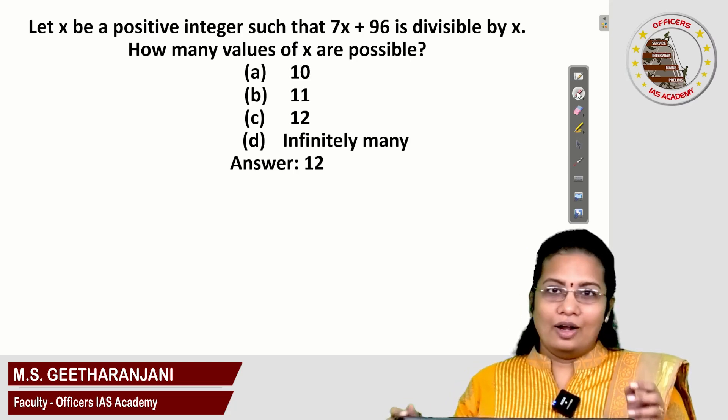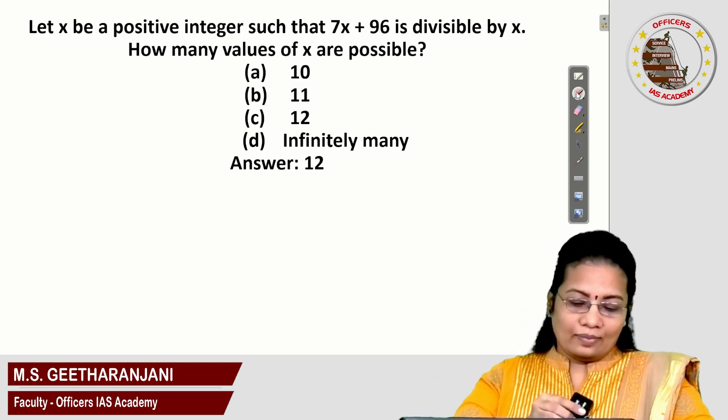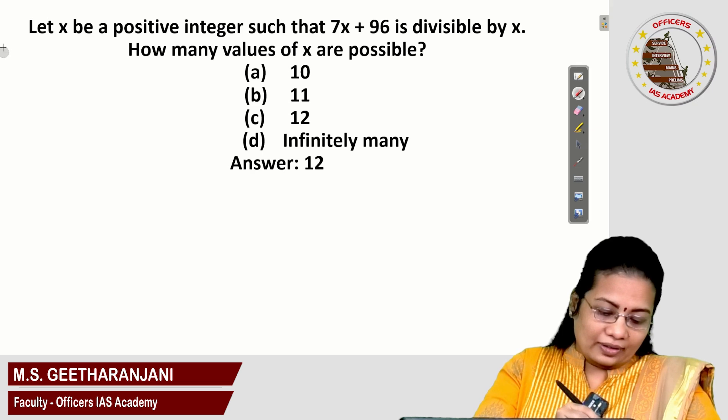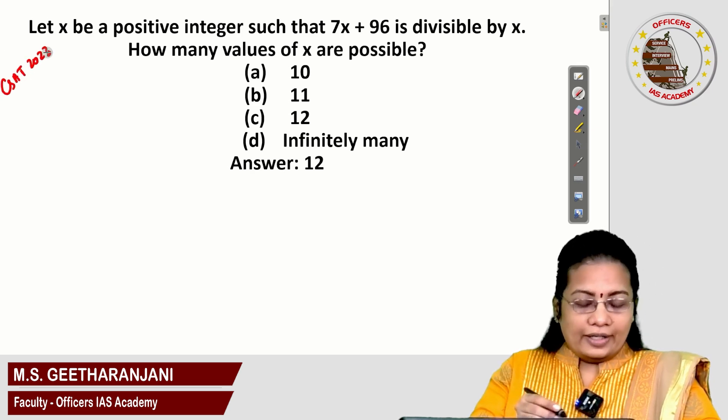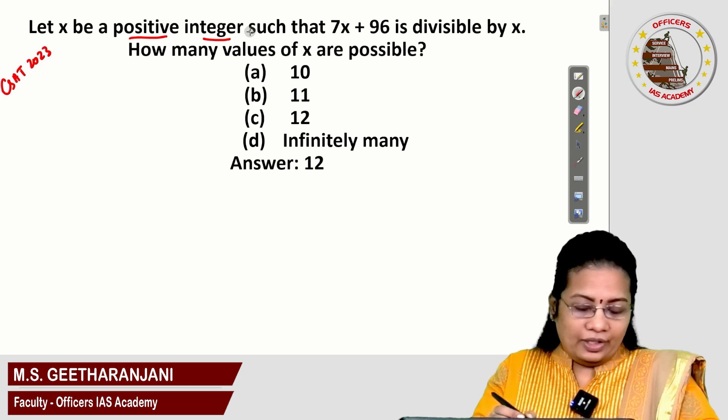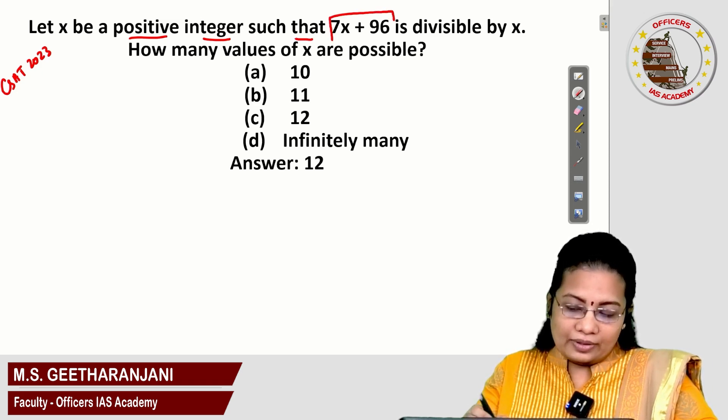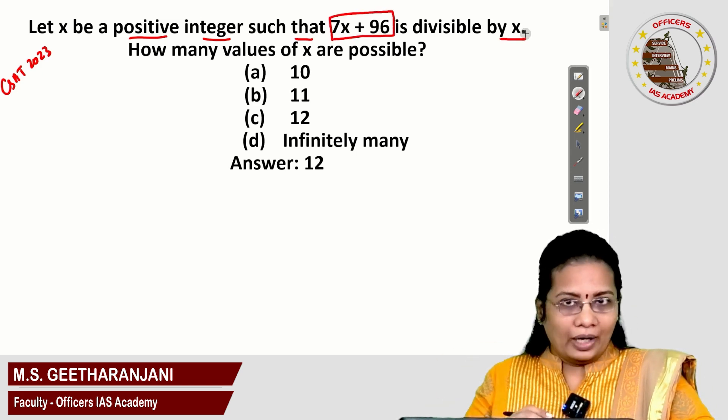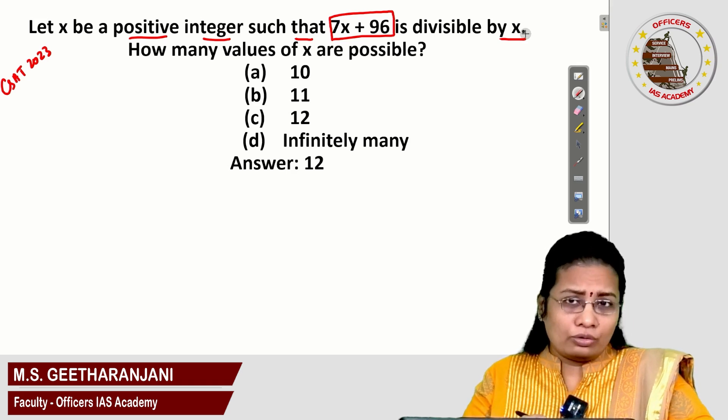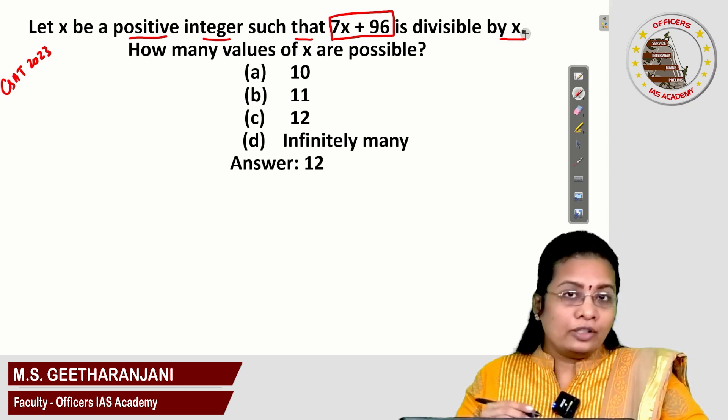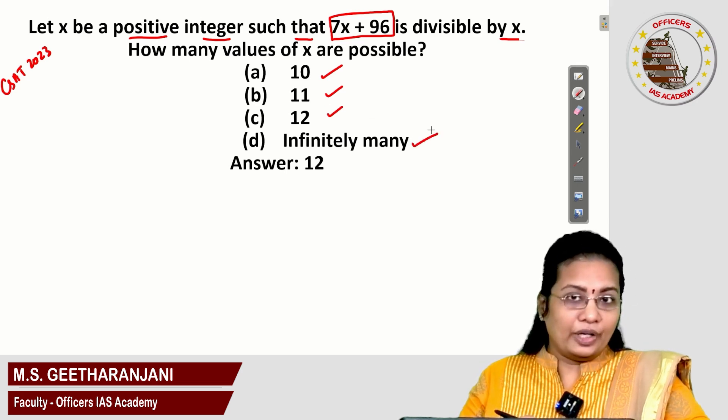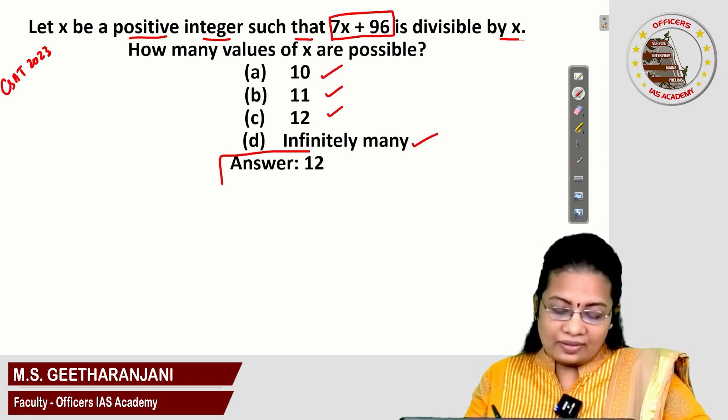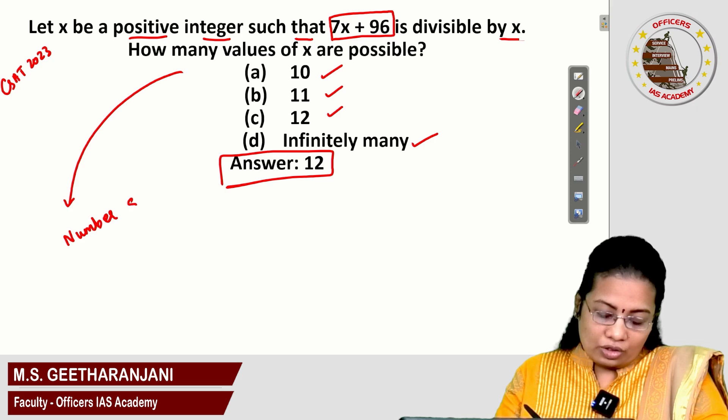Welcome to the CZ series. Today's question was previously asked in the CZ 2023 question paper. Let x be a positive integer such that 7x plus 96 is divisible by x. How many values of x are possible? In the options you can see 10, 11, 12, infinitely many. The correct answer is 12. This question was asked from the number system.